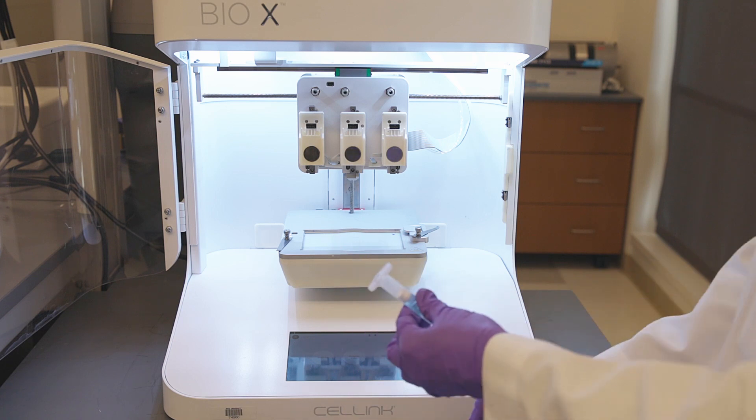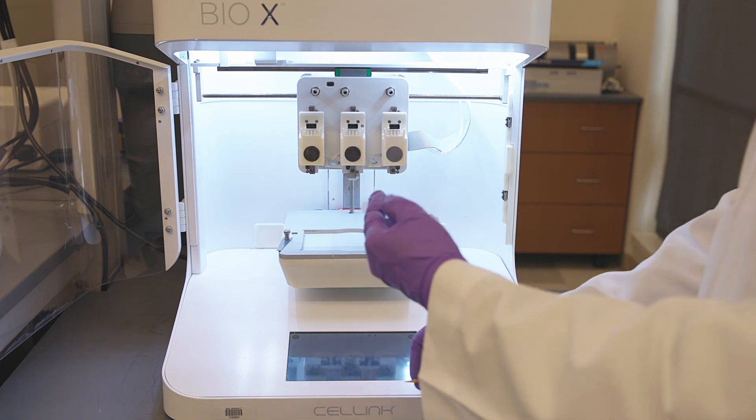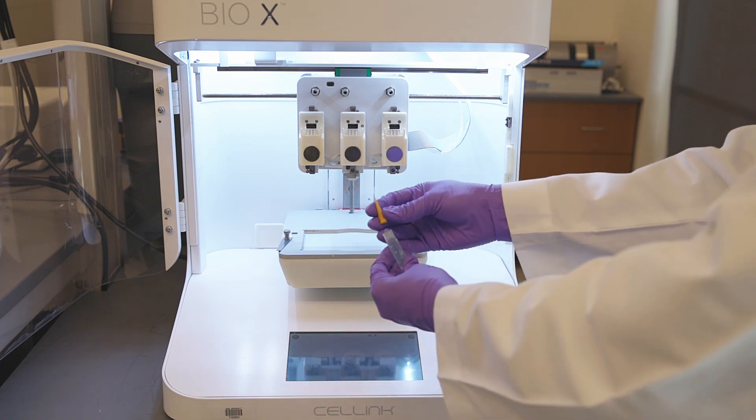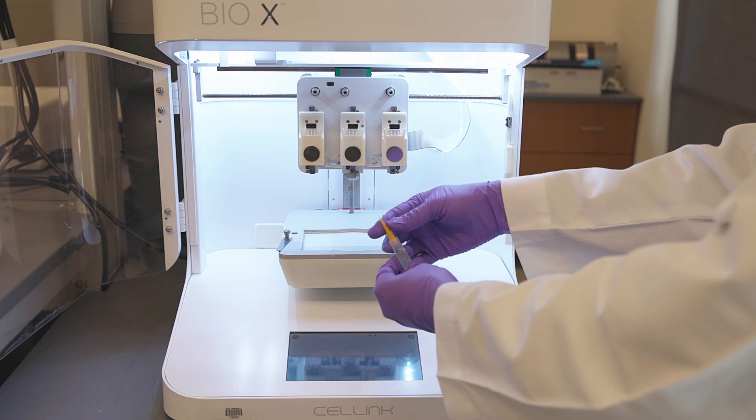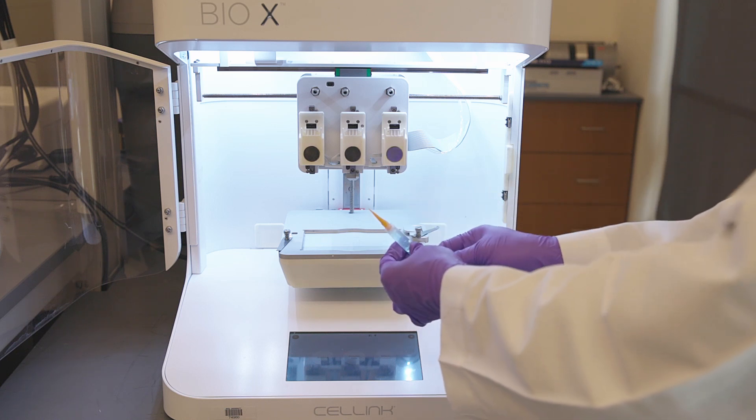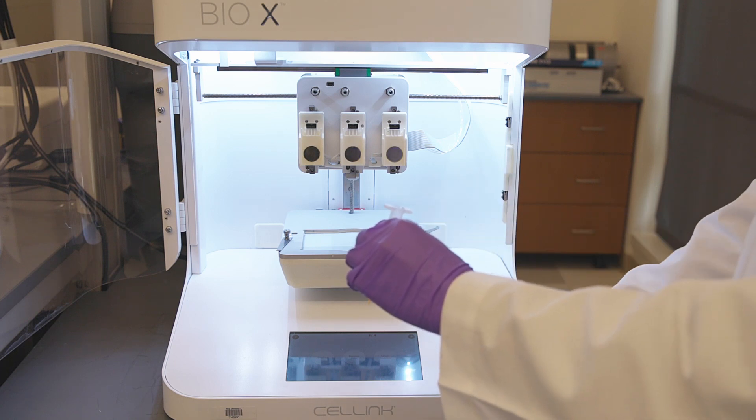On the luer lock end, we will be inserting the needle of our desired gauge. Today, we will be using a 23 gauge tapered needle. On the other end, we will be inserting the air compressor line adapter.